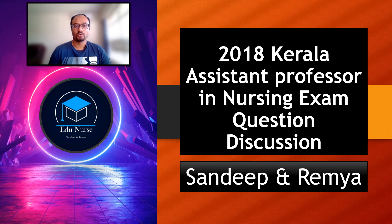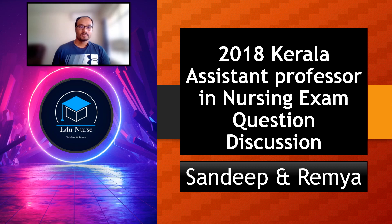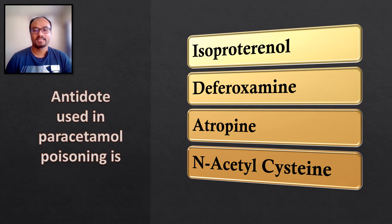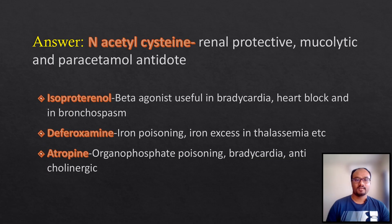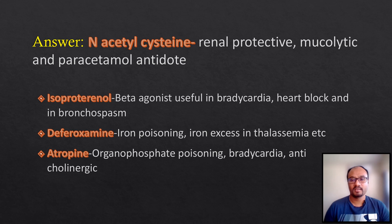The first question is: the antidote used in paracetamol poisoning is — and the options are isoproterenol, deferoxamine, atropine, and N-acetyl cysteine. The correct answer is N-acetyl cysteine, which is a renal protective drug and is used as a mucolytic.